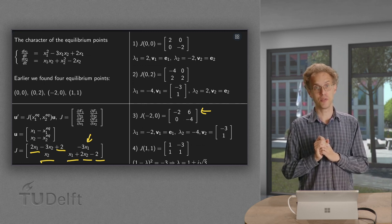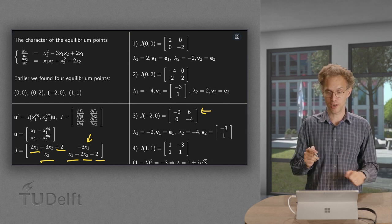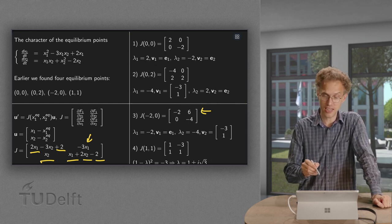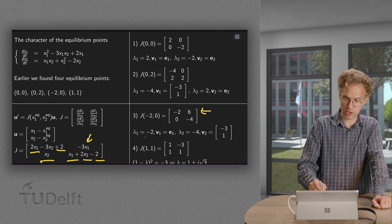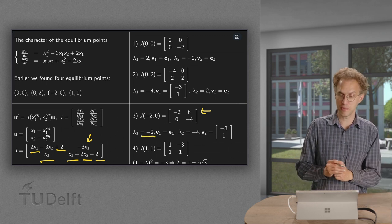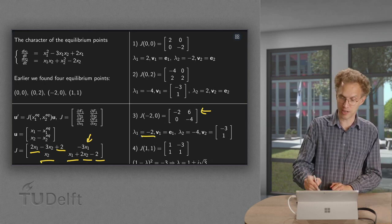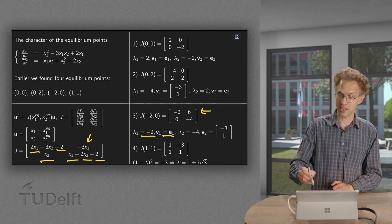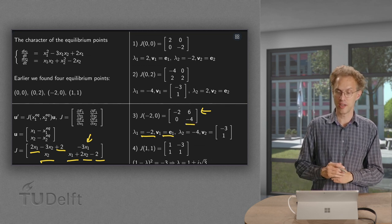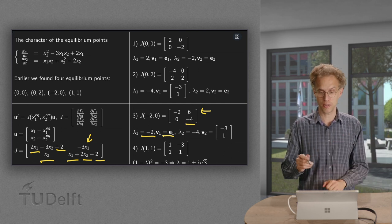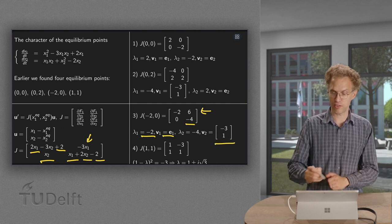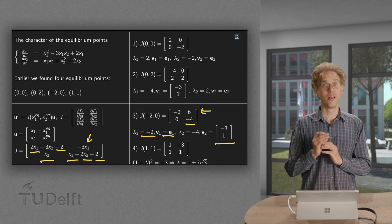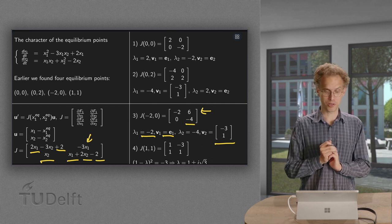Again we can compute the eigenvalues. We have a triangular matrix, so this is again easy. We can read -2 with accompanying eigenvector (1,0) and the other eigenvalue -4. For that eigenvector you have to do a bit more work but you will find (-3,1). One more equilibrium point to go.